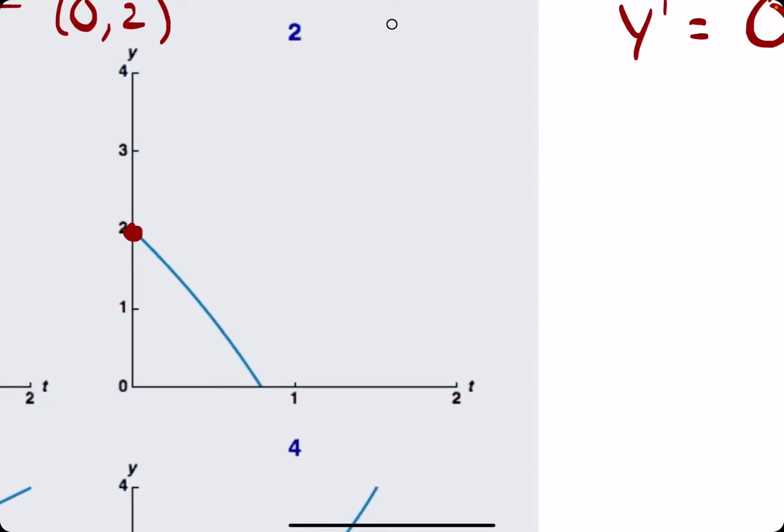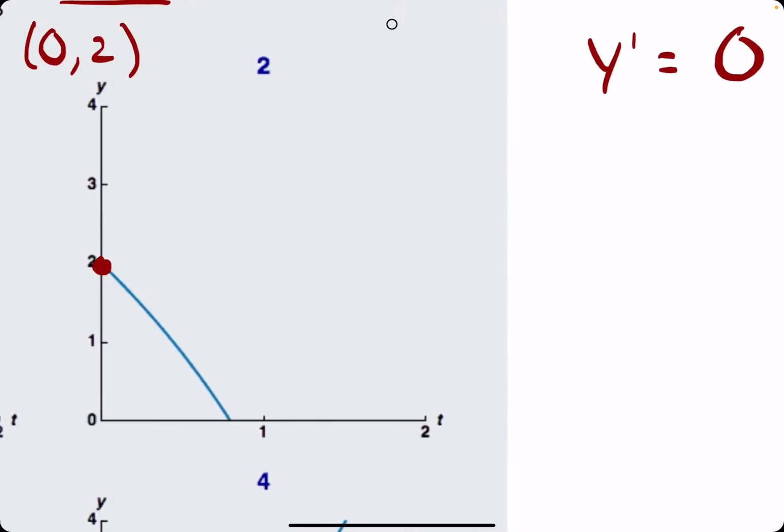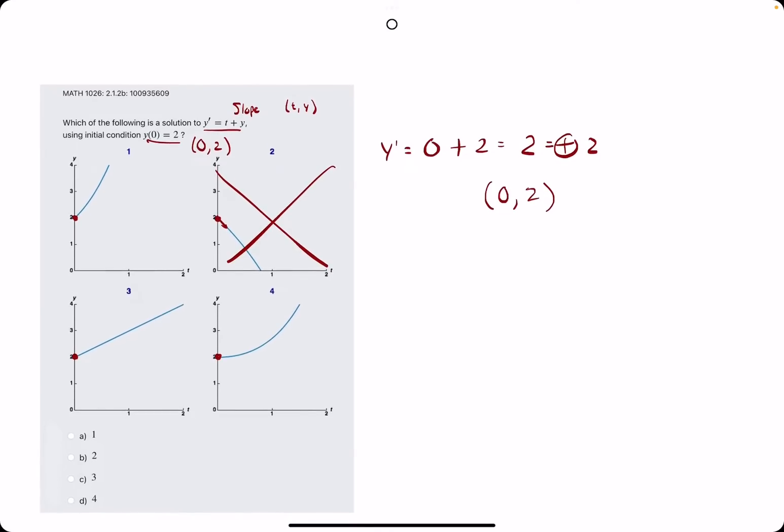So when we look at something like option 2, this has a very negative slope off the start, so we can eliminate option 2. When we look at the rest of them, they all kind of look positive. However, there's something important to mention about number 4.